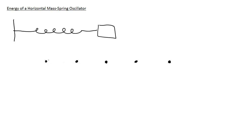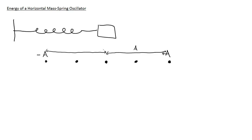Our equilibrium position is right here in the middle. The very left point is going to have negative a, where a is the amplitude. The very right-hand position is going to have positive a. The amplitude is just the greatest displacement that the spring will have from its equilibrium position — so the distance from equilibrium to the right point is positive a, and to the left maximum position is negative a.